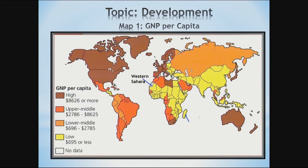An example of a low GNP per capita country is Madagascar. Next, lower-to-middle GNP per capita ranges from $696 to $2,785 — an example being Peru. Then we move on to upper-to-middle GNP per capita, which is $2,786 up to $8,625.